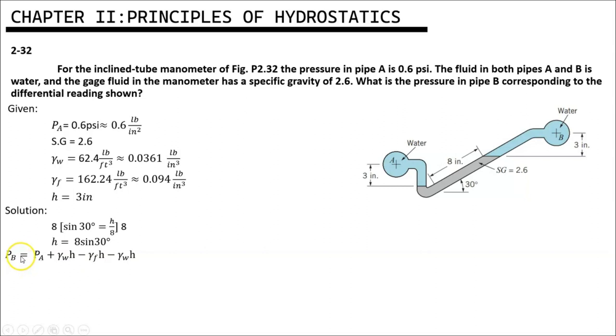point B is equal to point A plus specific weight of water times height minus specific weight of fluid times height minus specific weight of water times height.